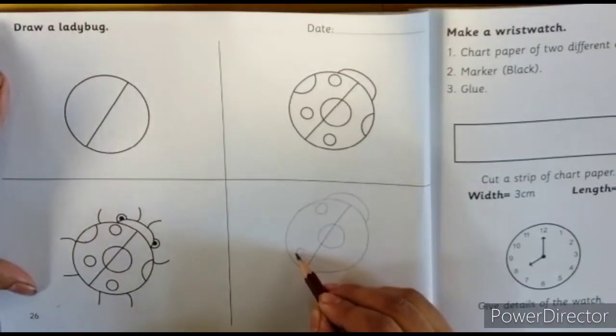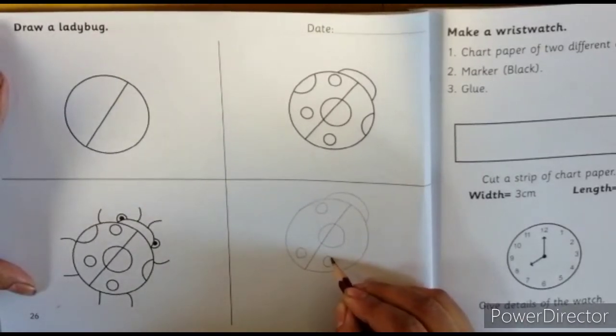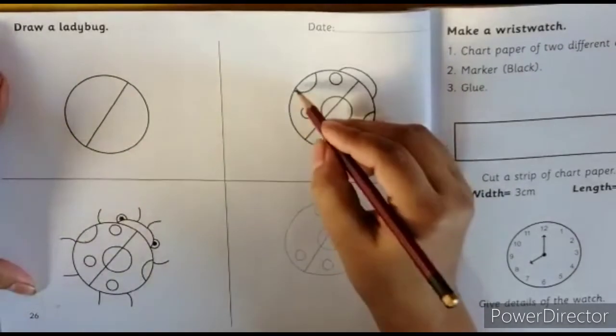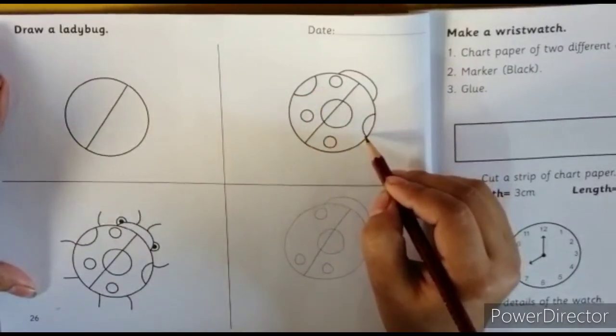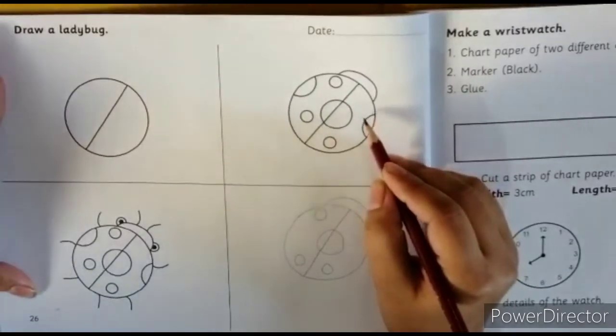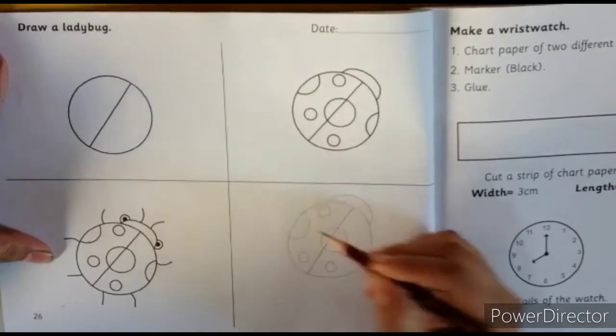One here and one here, and then we make semicircles. You can see that you can make a ladybug. And then we make two semicircles, one.